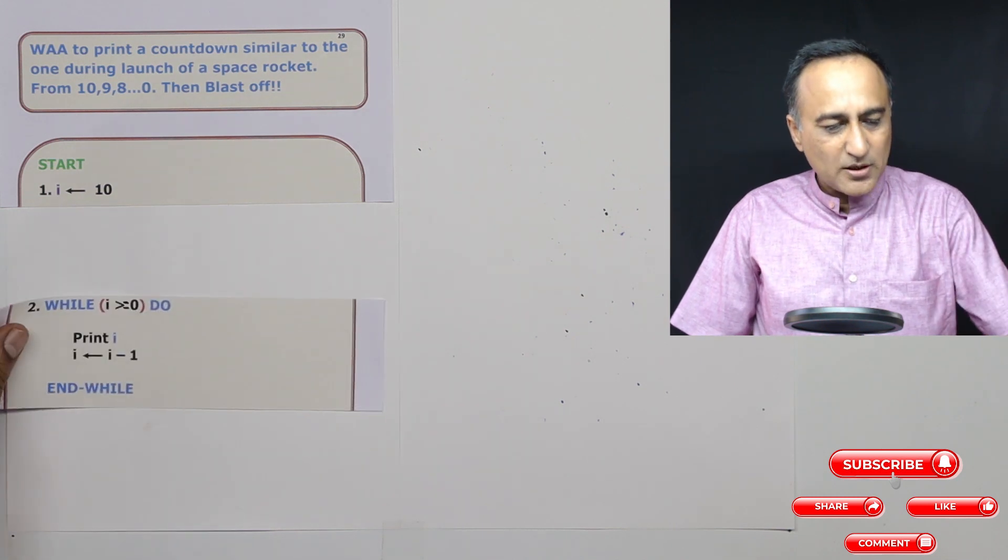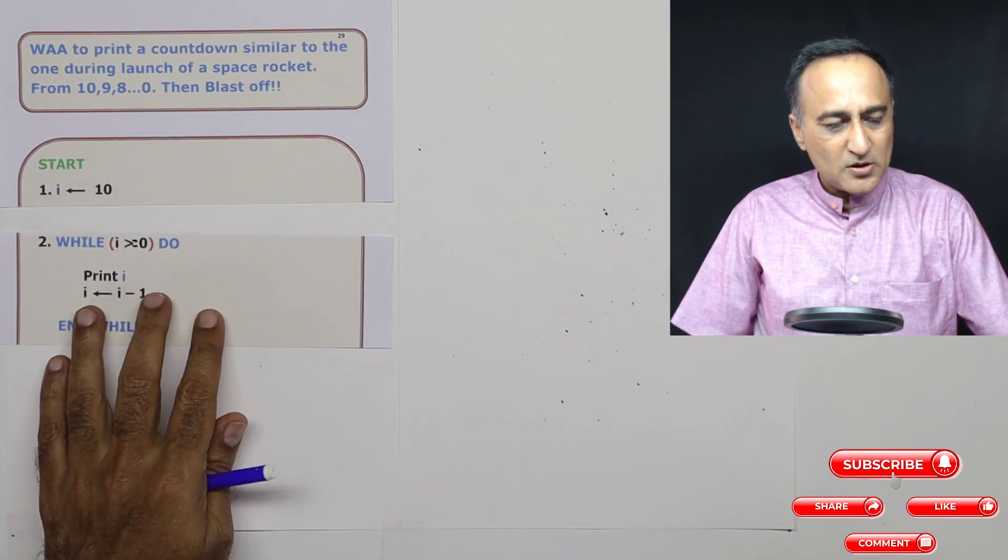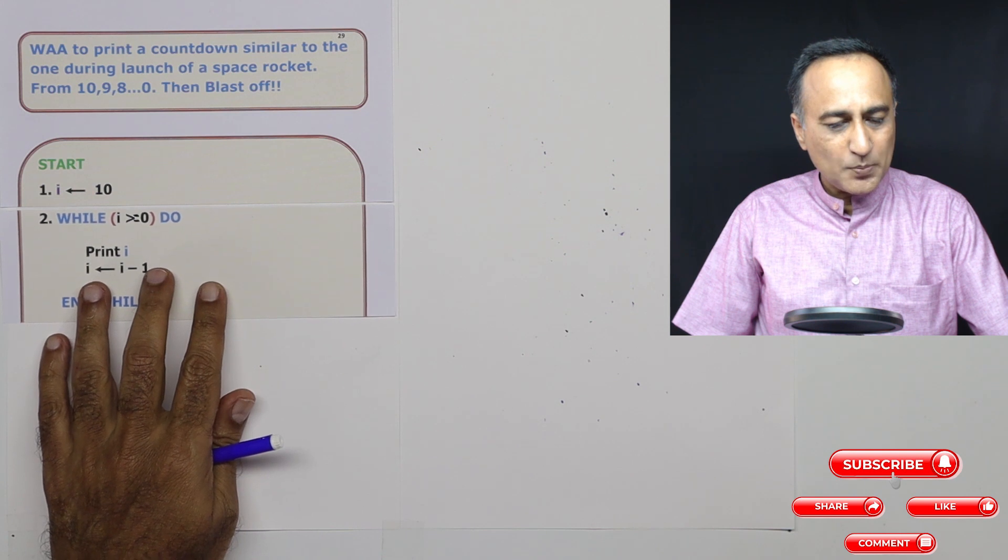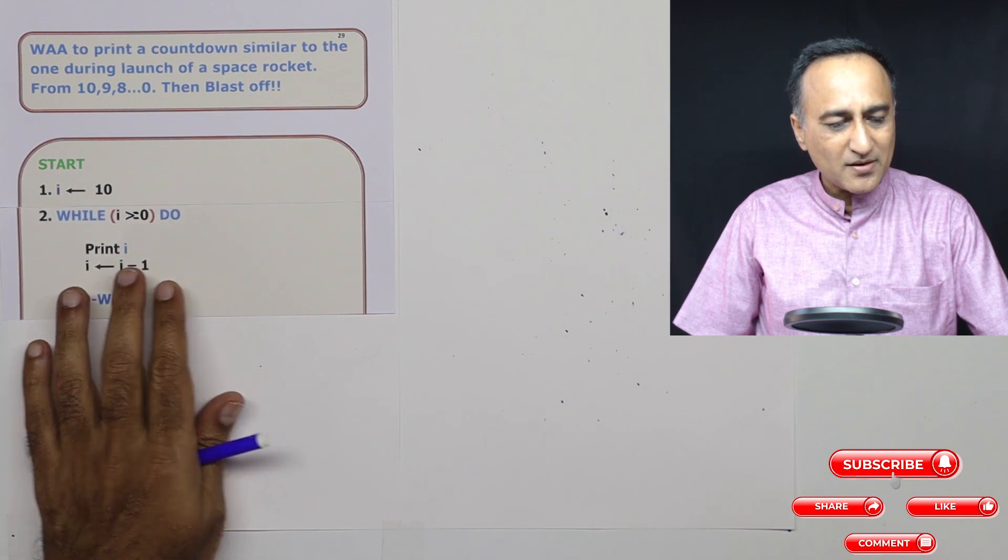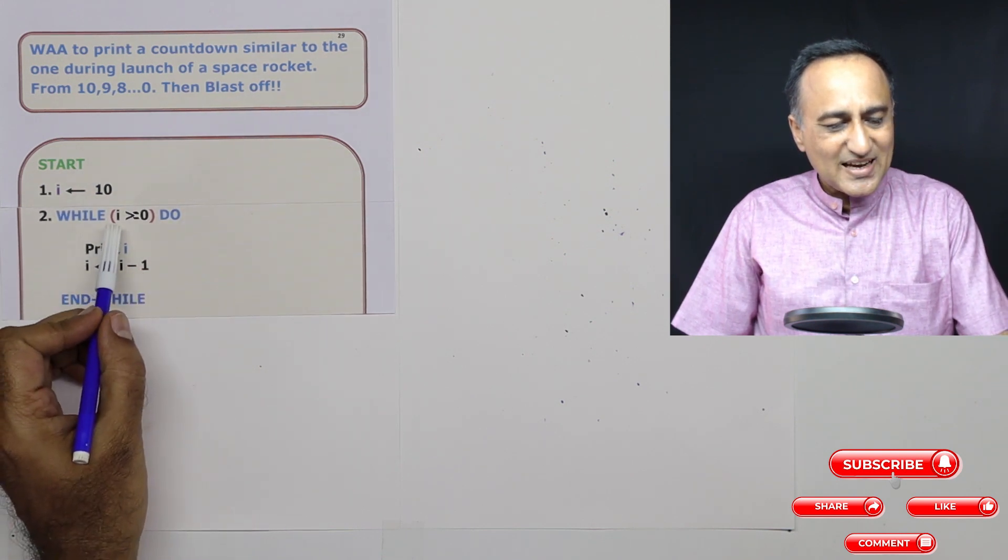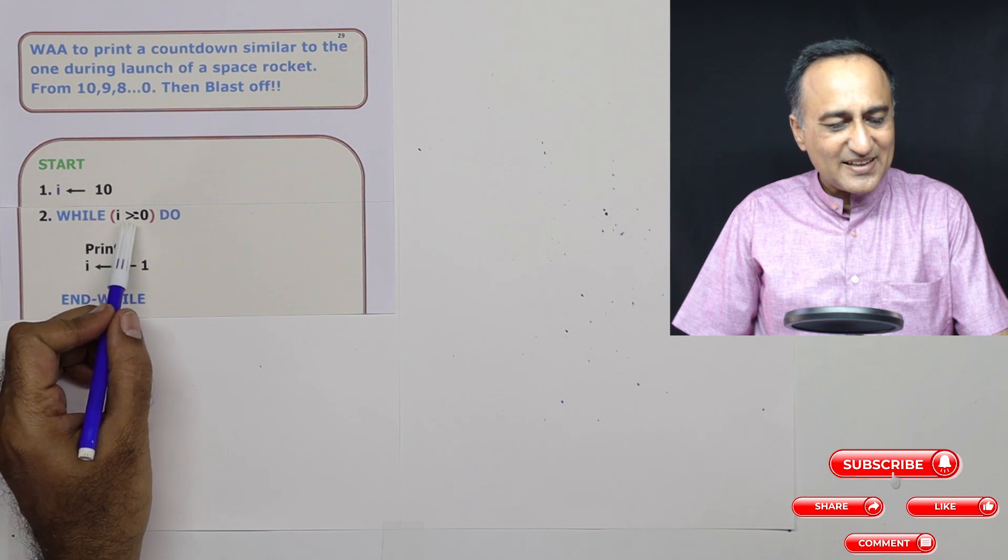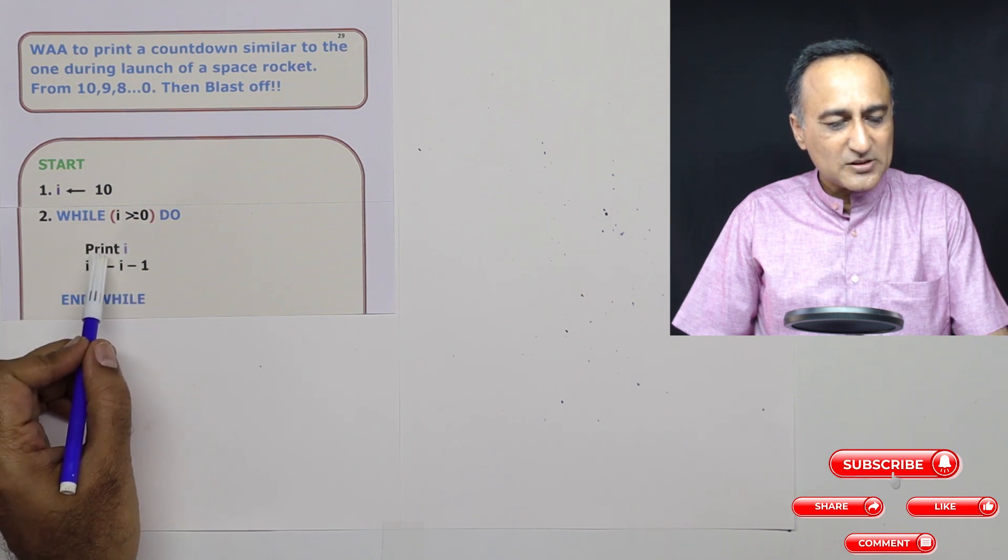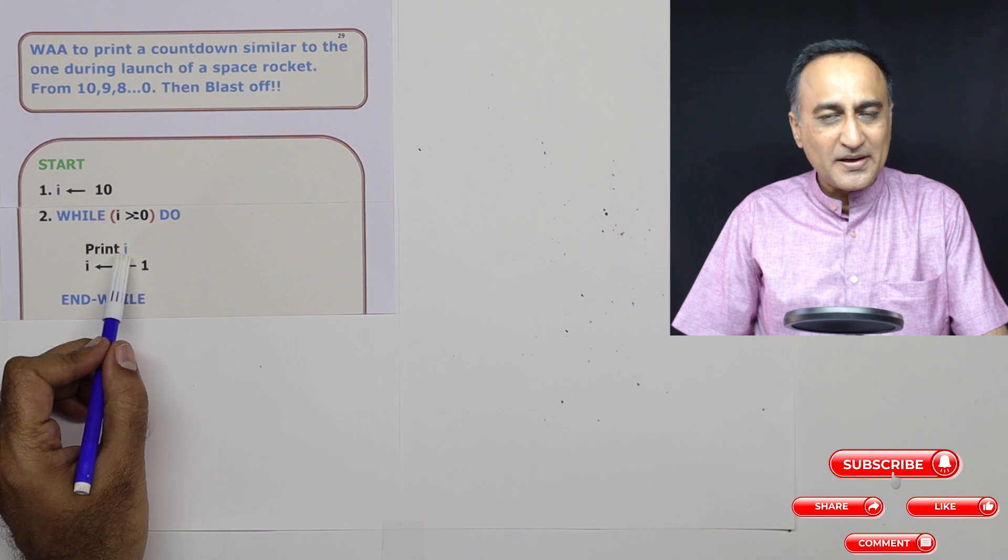So I again use the while loop. So let's see what we're doing in the while loop here. What we're doing is as long as I, which is 10, is greater than or equal to zero, keep doing this. So I'm first going to print I which is going to print 10.